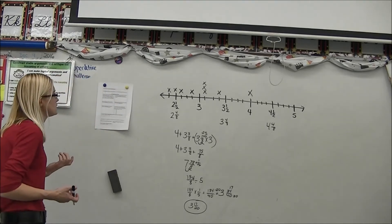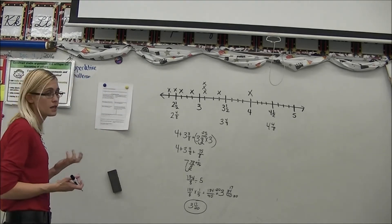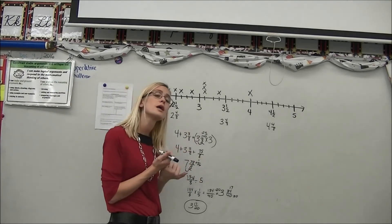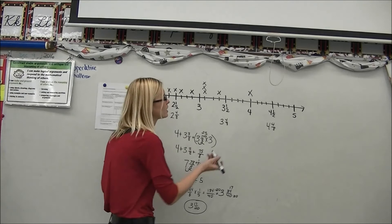Next question. What is the difference between the greatest amount of time and the least amount of time? Well the simplest strategy I can tell you is, if I know our line is divided into eighths, I can just count my eighths.